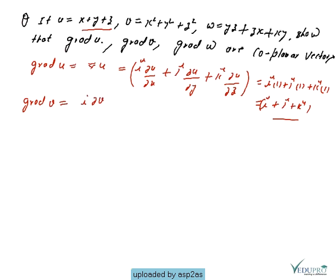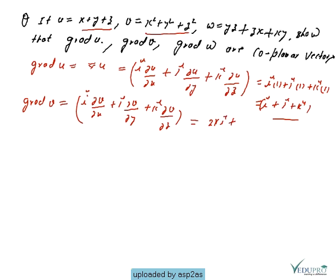Similarly, grad v = i(∂v/∂x) + j(∂v/∂y) + k(∂v/∂z). Since v = x²+y²+z², the partial derivatives are 2x, 2y, 2z respectively. So grad v = 2xi + 2yj + 2zk.